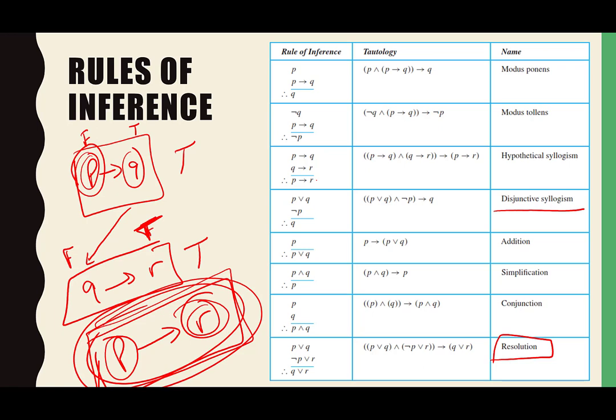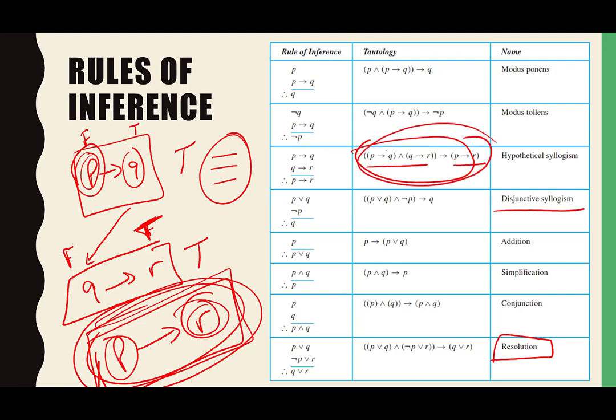A student asked whether this is the same as logical equivalences. When we looked at logical equivalences on day one, the triple equal sign means two things have the same truth value no matter what. This is not necessarily saying that. This part here is a tautology, saying this therefore this will always be true — but I'm not saying it's logically equivalent to anything.